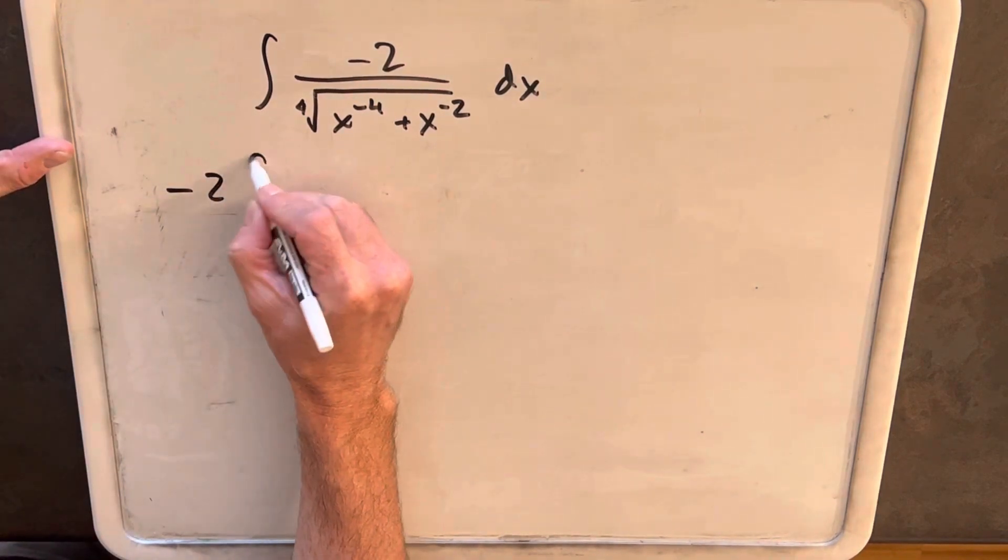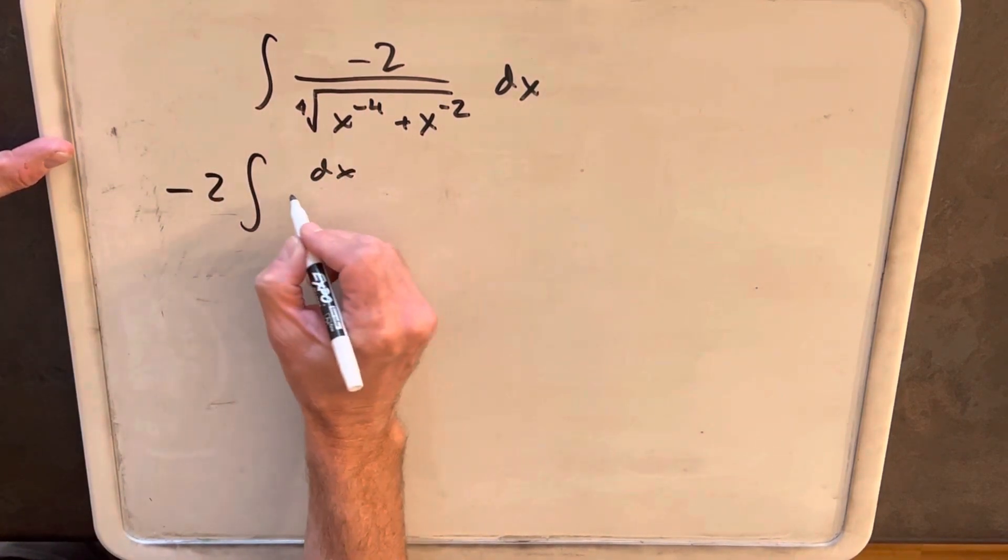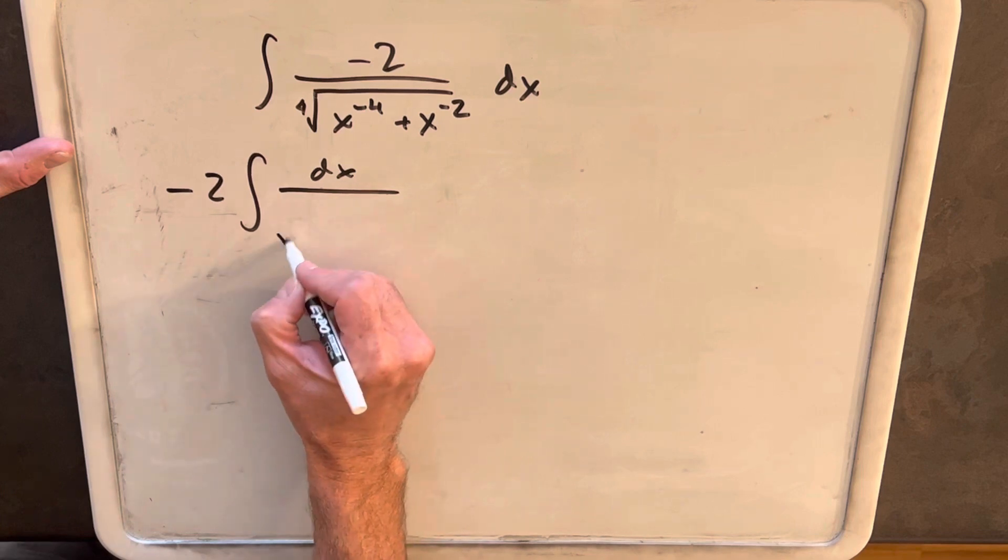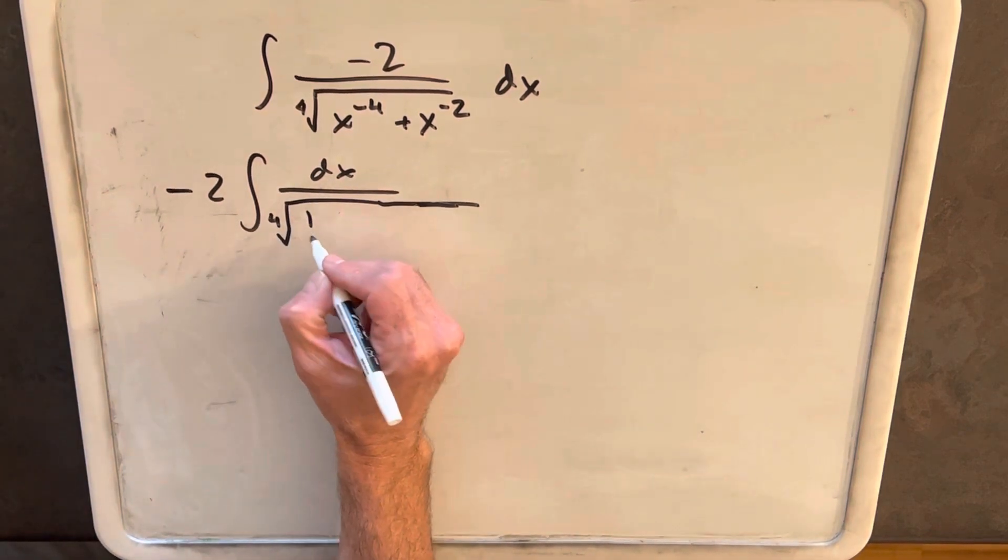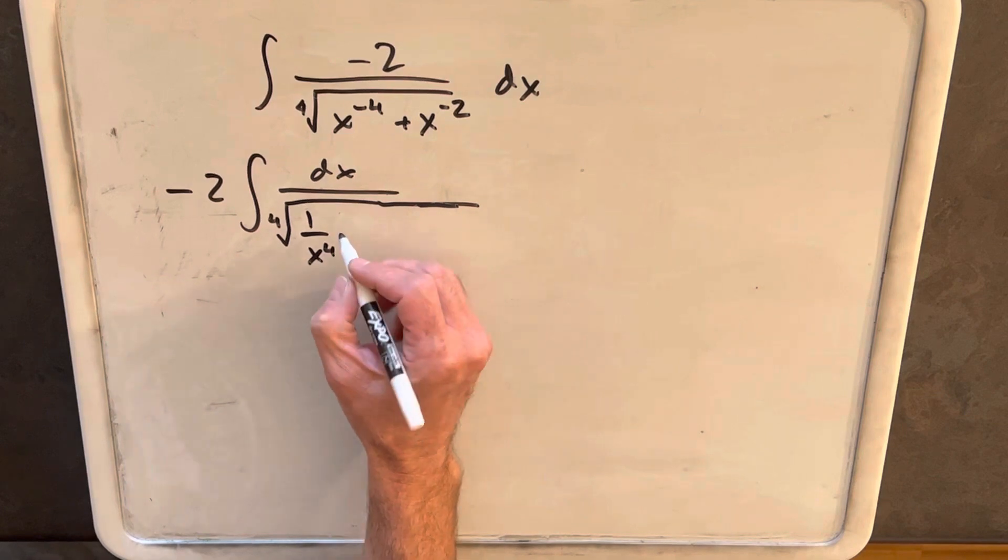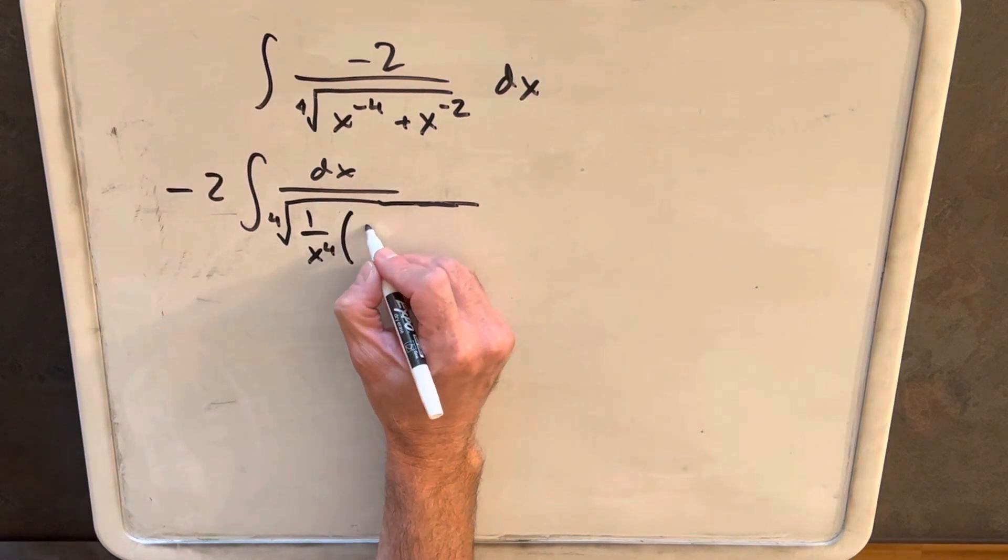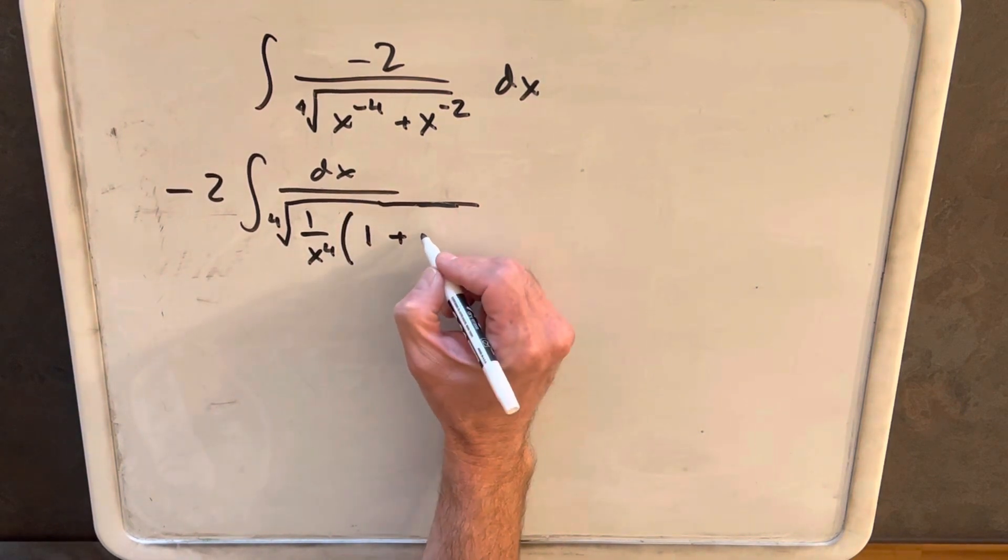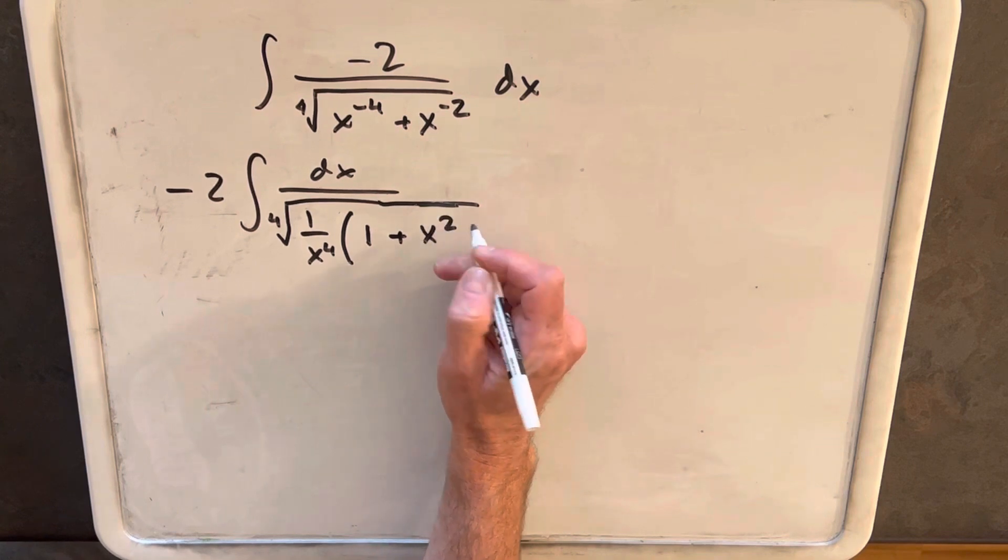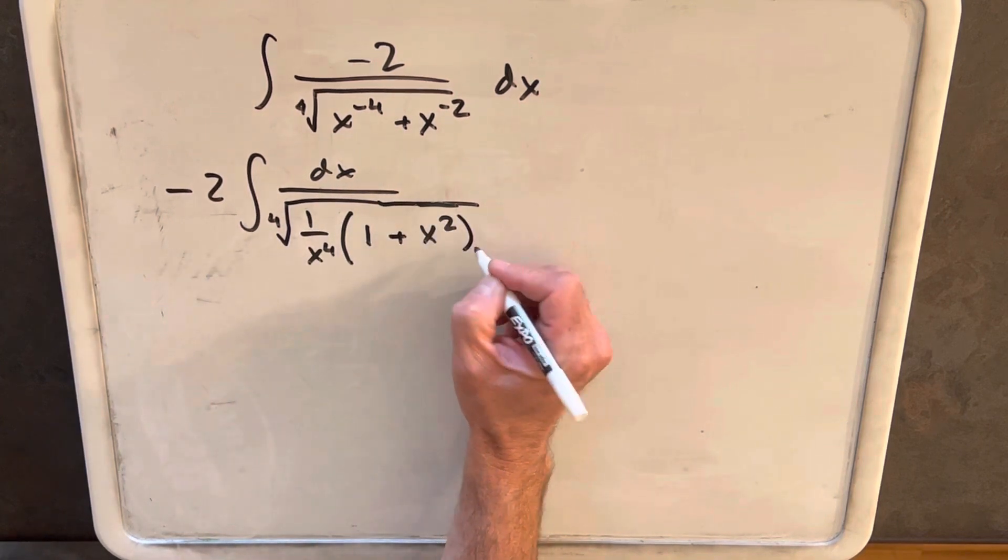I'm going to bring the minus 2 outside the integral, and then we'll have a fourth root here. We'll write x to the minus fourth as 1 over x to the fourth, and we'll factor that out, so this first term is going to be a 1, and then this will be an x squared, noticing that x squared times x to the fourth is x to the minus 2.